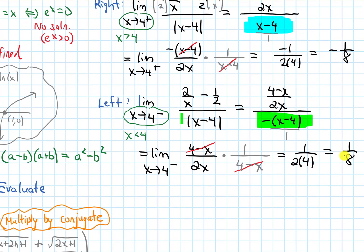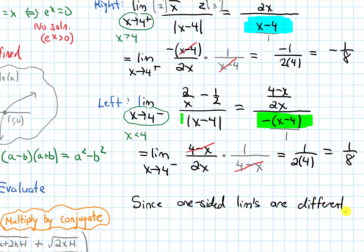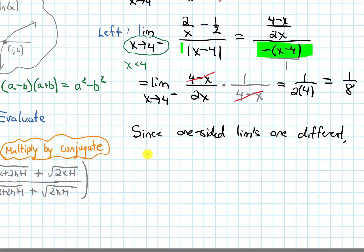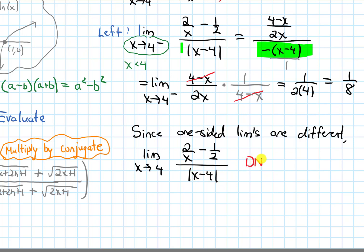We now know the limit from the right is negative 1 over 8, and the limit from the left is 1 over 8, and they're different. Since the one-sided limits are different, the limit as x approaches 4 of 2 over x minus 1 half over the absolute value of x minus 4 does not exist.